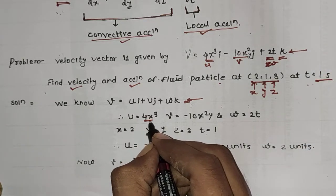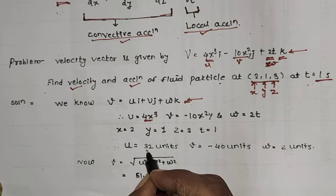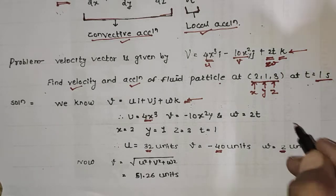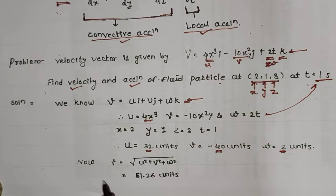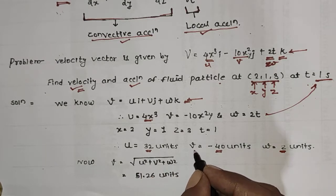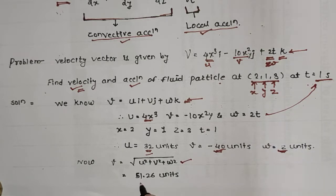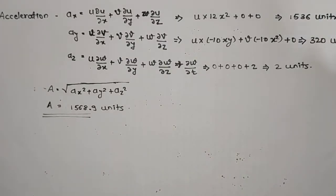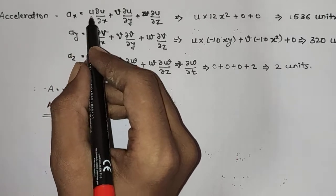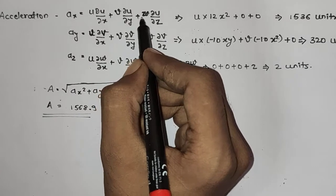To find the magnitude of velocity, we compute V = √(u² + v² + w²). After substituting u = 32, v = −40, and w = 2 into the equation, we get the magnitude of velocity as 51.26 units. Now to calculate the acceleration, we note this is a steady-state equation — velocity is not changing with respect to time — so ax = u(∂u/∂x) + v(∂u/∂y) + w(∂u/∂z).